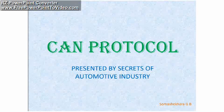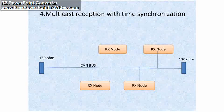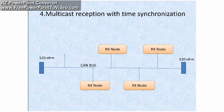Let's begin with our fourth property of the CAN protocol: multicast reception with time synchronization. This means messages will be broadcasted over the CAN bus, and based on system design, nodes will decide whether to act on them or not. We will see this with an animated example — the transmitting node is going to broadcast its message over the CAN bus.